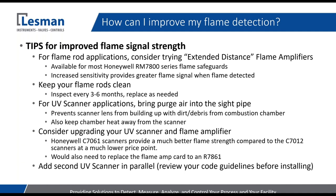For UV scanner applications, if you're not already bringing purge air into the sight pipe, it's a common and highly recommended practice. It keeps the scanner lens clean and free of debris. If you've got dirt or debris in the application, depending on where the sight pipe is, it could be collecting on the scanner lens. Bringing a little bit of purge air into the system will help keep that area free and clear so the dirt goes elsewhere downstream in the combustion chamber. It's also good for higher temperature applications where you could be getting heat transfer from the chamber acting back on the scanner — keeping positive pressure in the sight pipe will keep that scanner lens cool and prevent heat transfer from acting back on the UV scanner and its electronics.